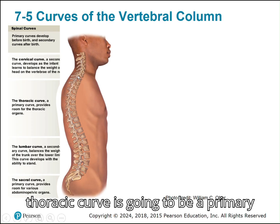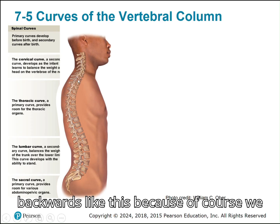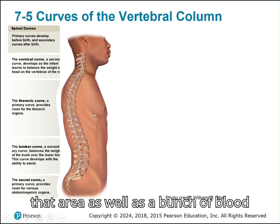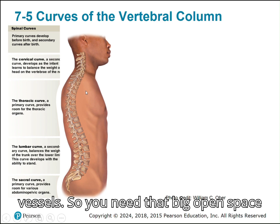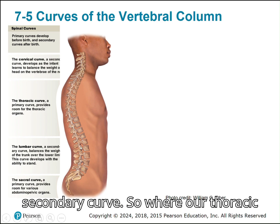The thoracic curve is going to be a primary curve. It curves posteriorly, which is important because our heart, lungs, and blood vessels sit in that area — you need that big open space. The lumbar curve is another secondary curve.